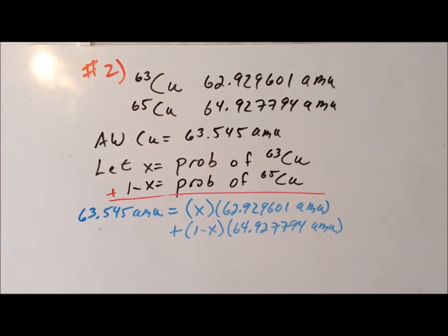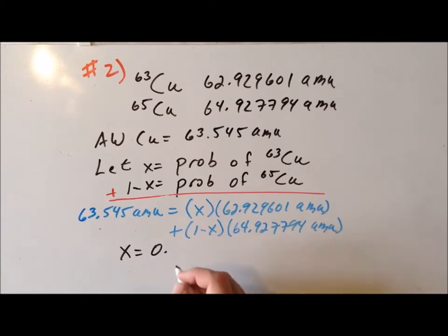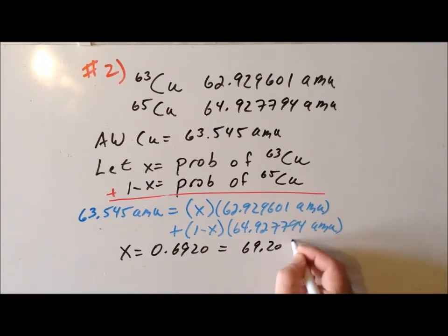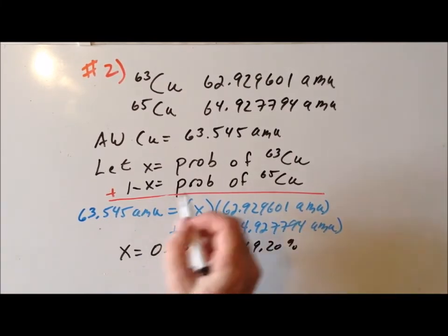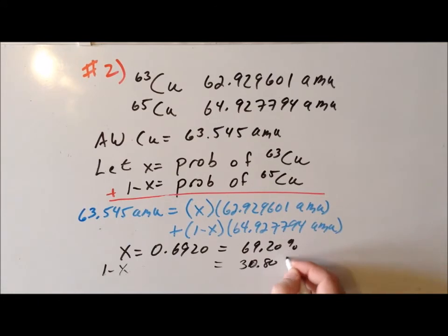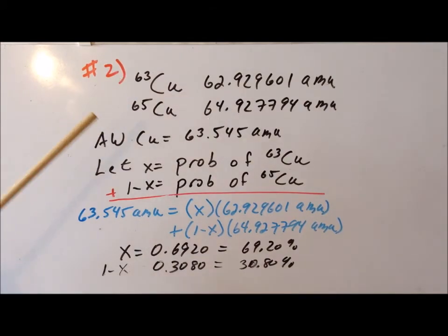So now we can continue and actually work out algebraically what our result is going to be. If we solve, we get that x is equal to 0.6920, which tells us that the probability of having copper-63 is 69.20%. Because we know that, we also know that the probability of copper-65 is 1 minus x, which must be 30.80%, equivalent to 0.308. So almost 70% of the copper atoms are going to be copper-63, and roughly 30% are going to be copper-65.